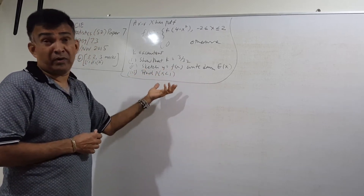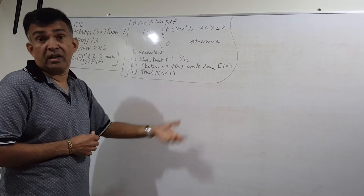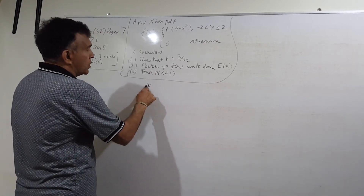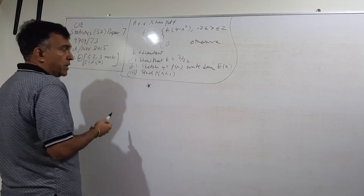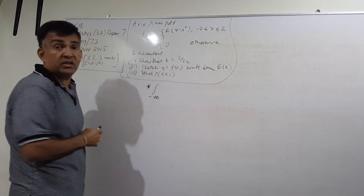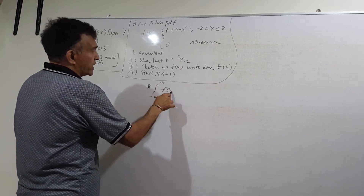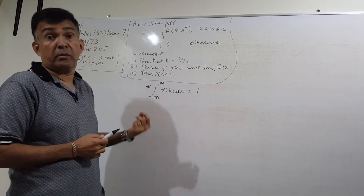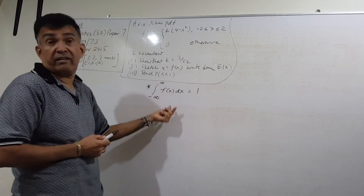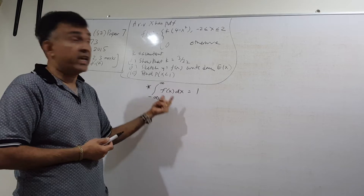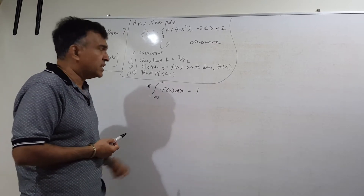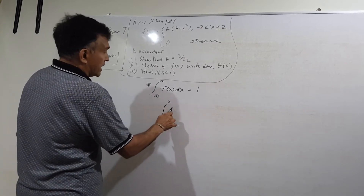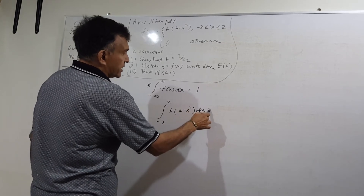To find K, the key property of a PDF is that the integral from negative infinity to infinity of f(x) dx must equal 1 — the total probability must be 1. In this case, the function is only non-zero between negative 2 and 2, so we write: the integral from negative 2 to 2 of K(4 minus x squared) dx equals 1.